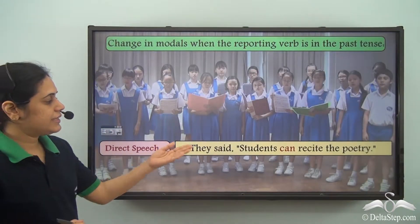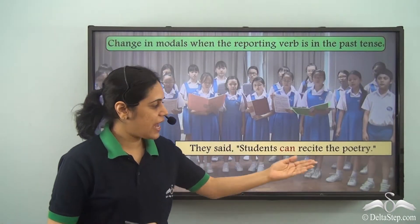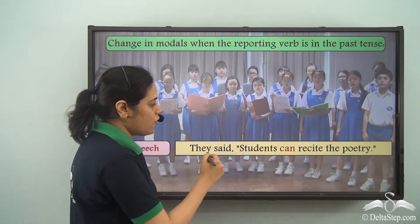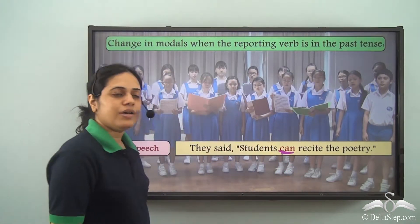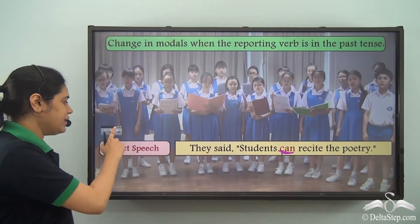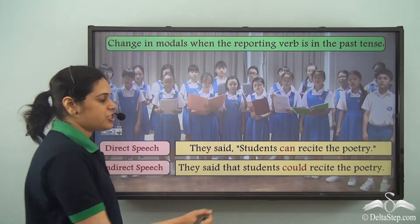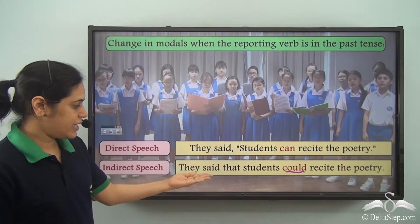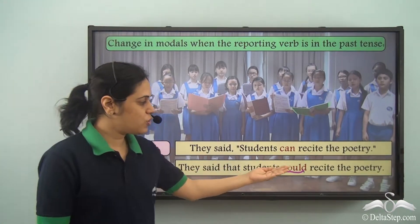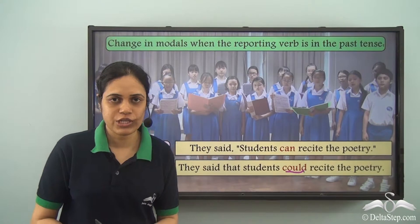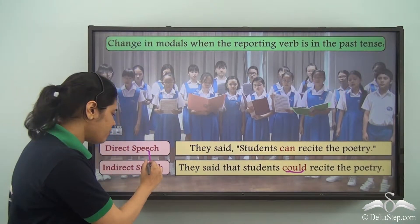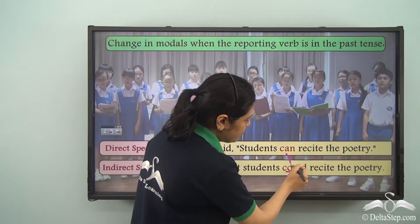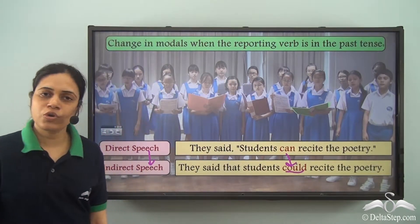'They said students can recite the poetry.' Here 'can' is a modal, and in indirect speech it changes to 'could': 'They said that students could recite the poetry.' So when converting from direct to indirect speech, 'can' changes to 'could'.